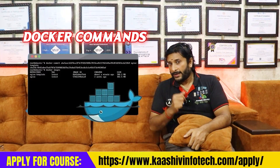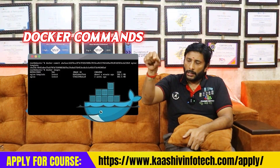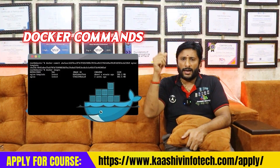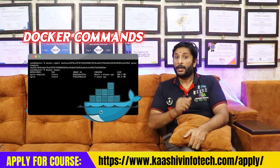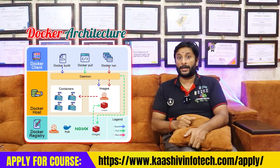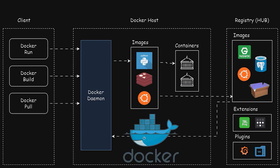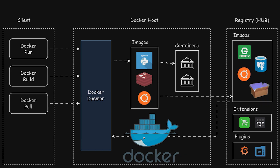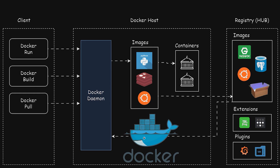If you execute the commands, we can use Docker architecture. There are three main parts. Let's talk about Docker Registry - there are all Docker images, and this is public or private. This is Docker Host. You can run the Docker Client. You can run the container.